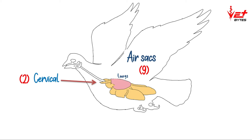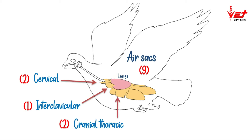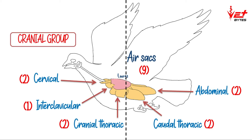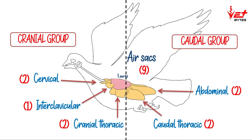The nine air sacs are: cervical air sacs (paired), interclavicular (unpaired), cranial thoracic (paired), caudal thoracic (paired), and abdominal air sacs (paired). These air sacs are divided into two groups: the cranial group — comprising cervical, interclavicular, and cranial thoracic — and the caudal group — comprising caudal thoracic and abdominal air sacs.